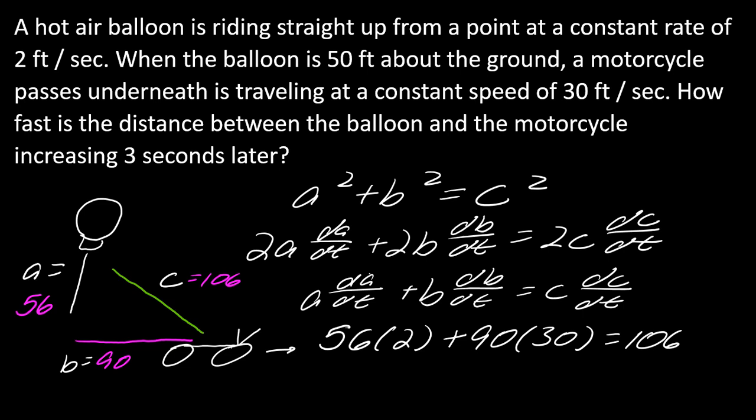And this is dc/dt. So that's what I need to solve for. Now I just have to go through and solve this like a typical algebra problem. So ultimately, this is going to come out to dc/dt equals 26.53